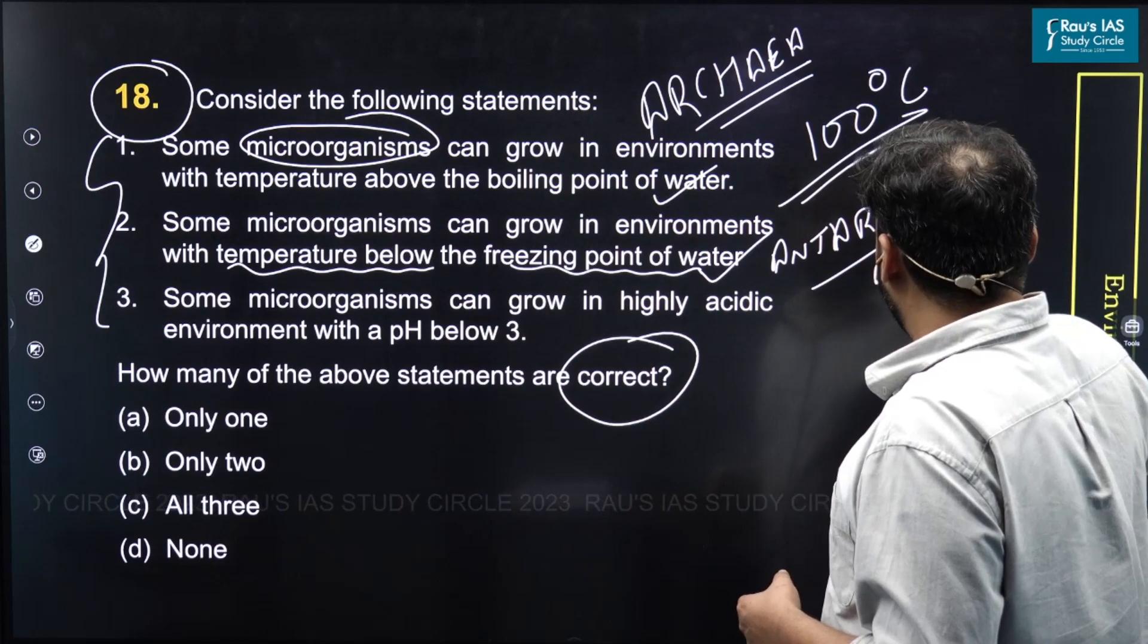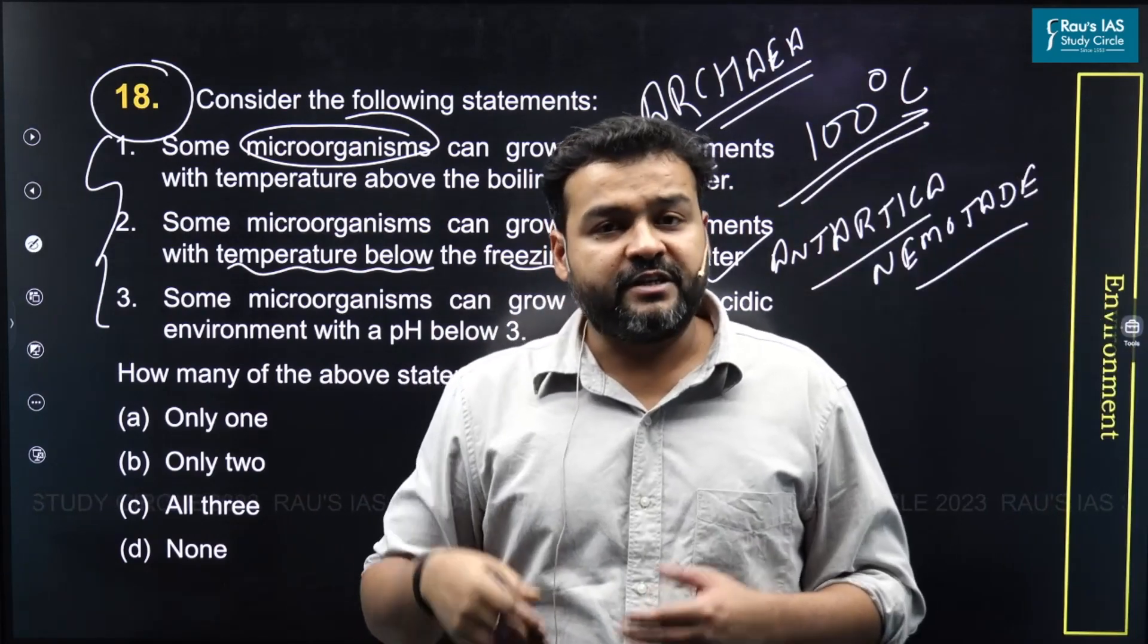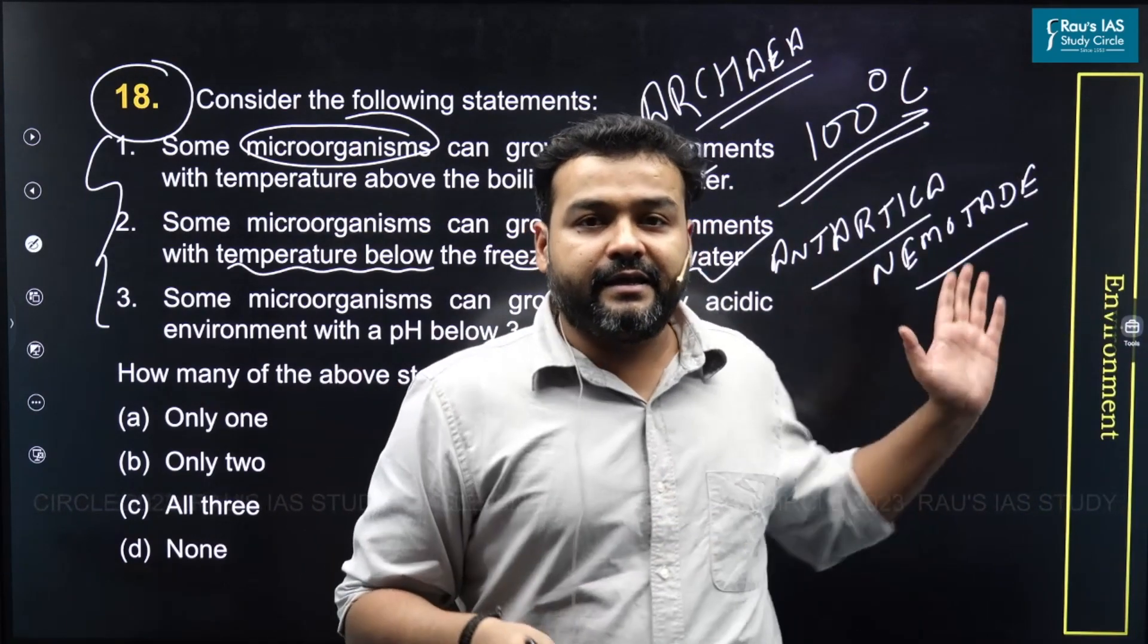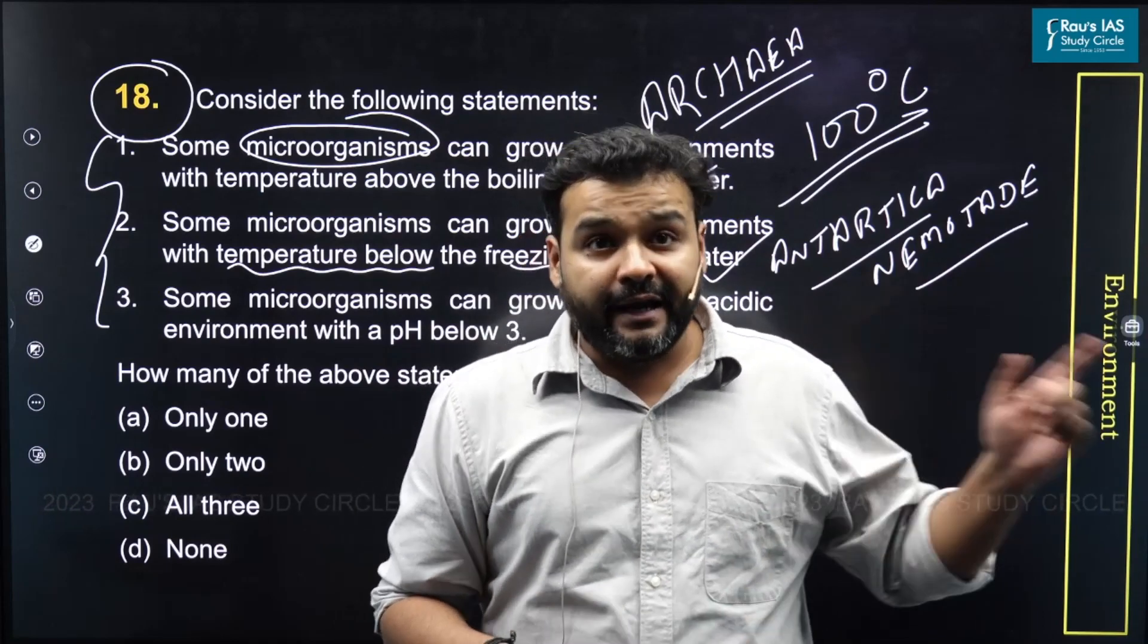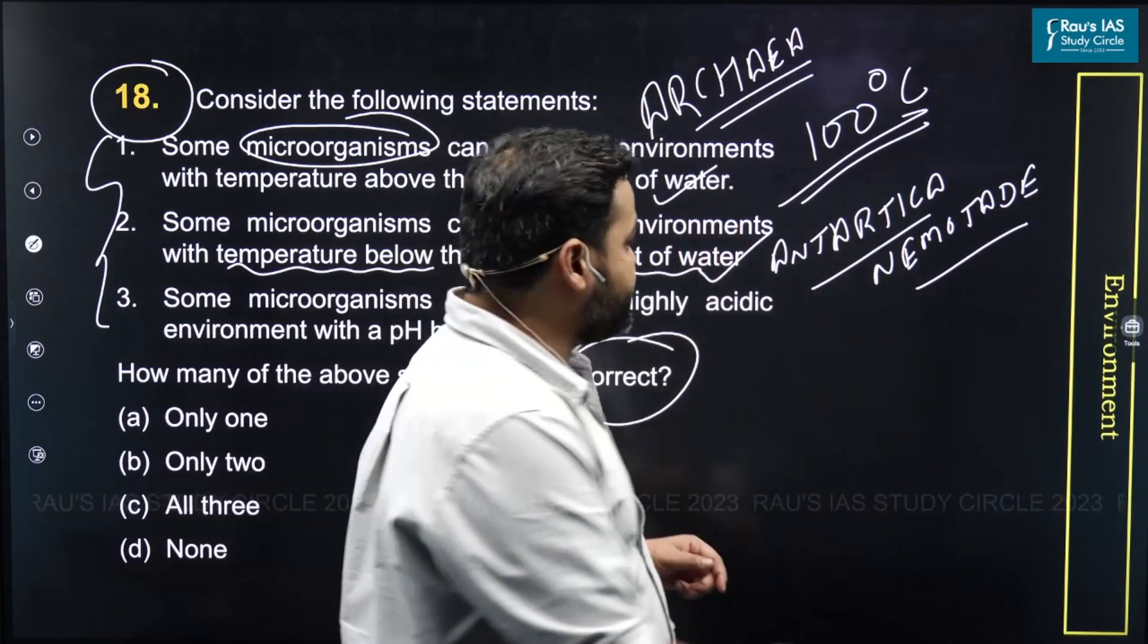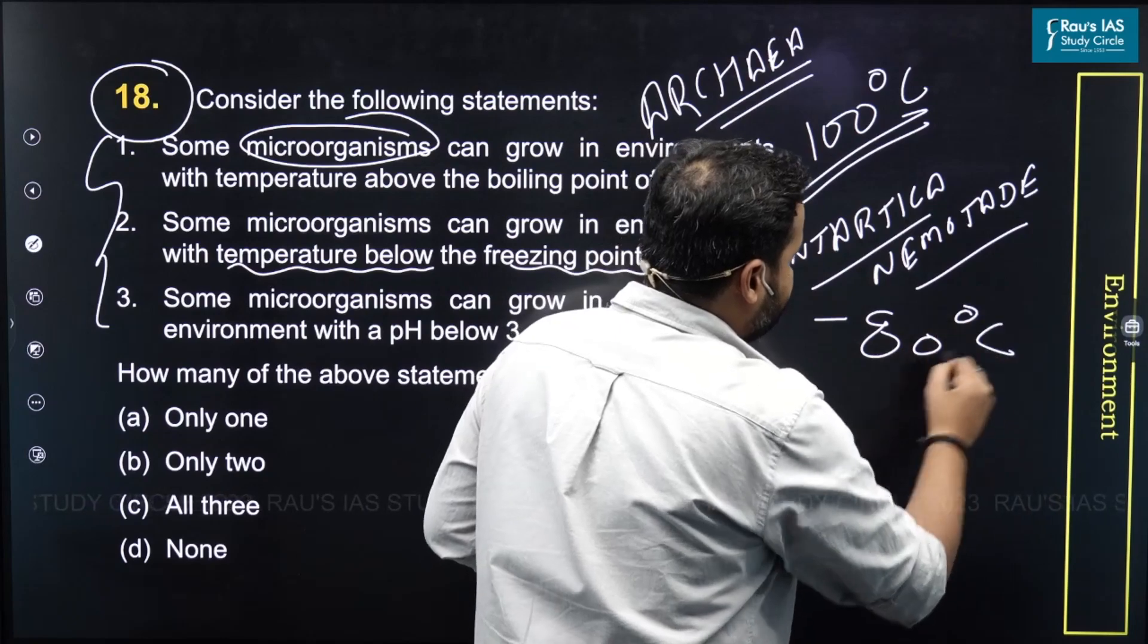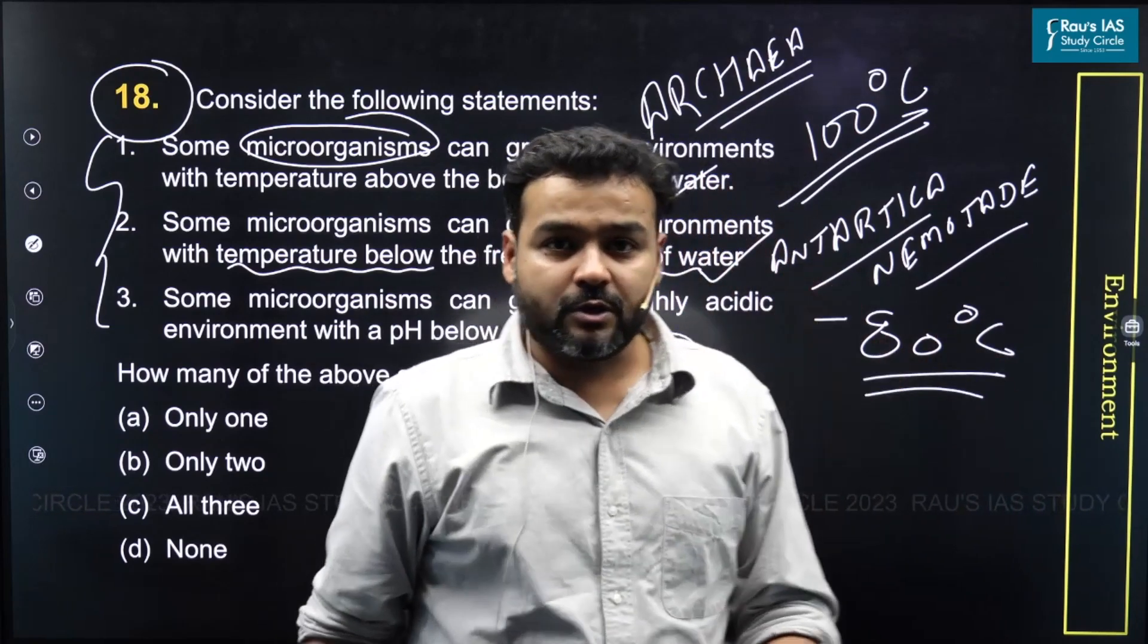Antarctica nematode, which is found around the area of Antarctica. It can survive temperatures up to minus 80 degrees Celsius. So statement two is also correct.